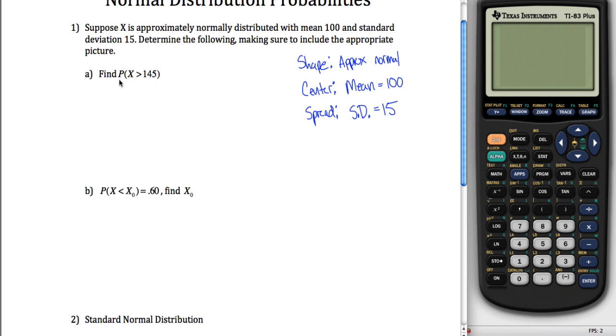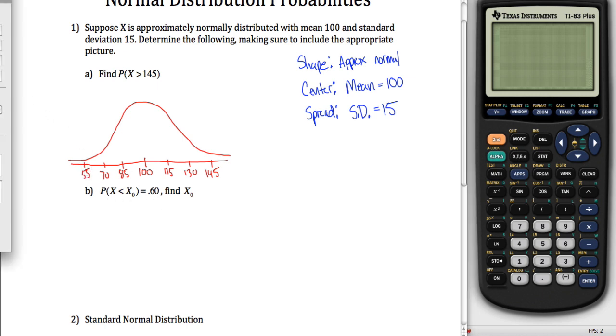Getting to the problem, the first one says find the probability that X is greater than 145. We can draw our distribution here, try to make it as symmetric as I can. We know the middle is 100, and the standard deviation is 15, so I can count up by one standard deviation, 2 and 3. Then similarly, count down: 100 minus 15 is 85, minus another 15 is 70, and another gets us 55.